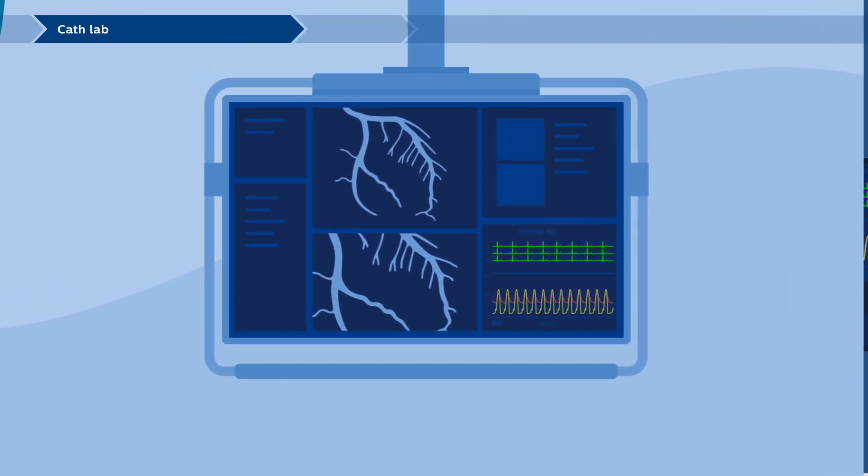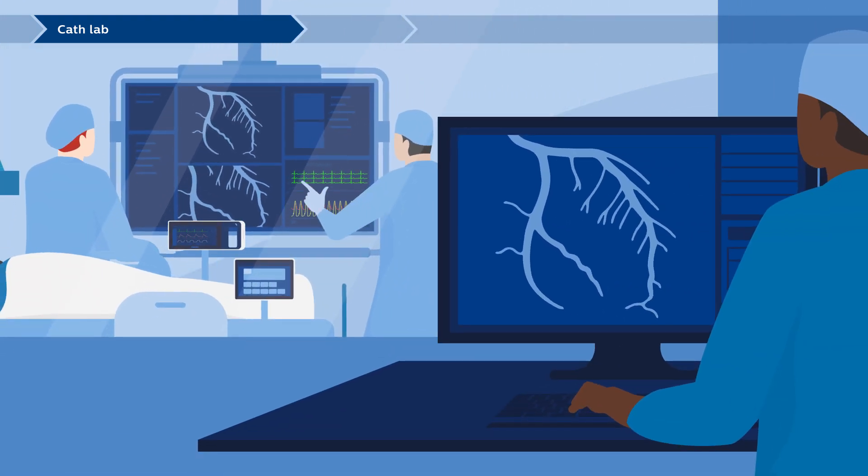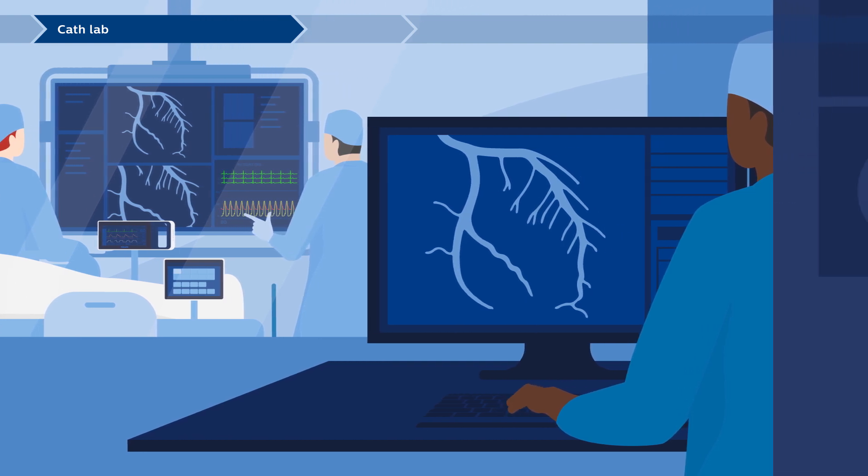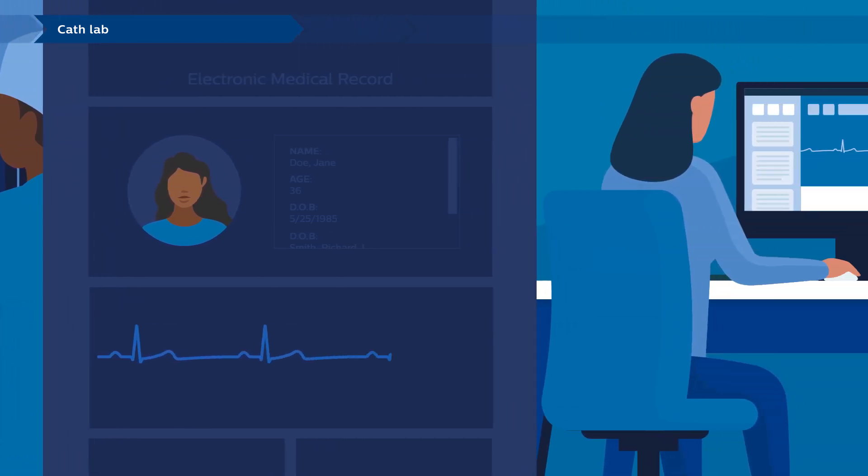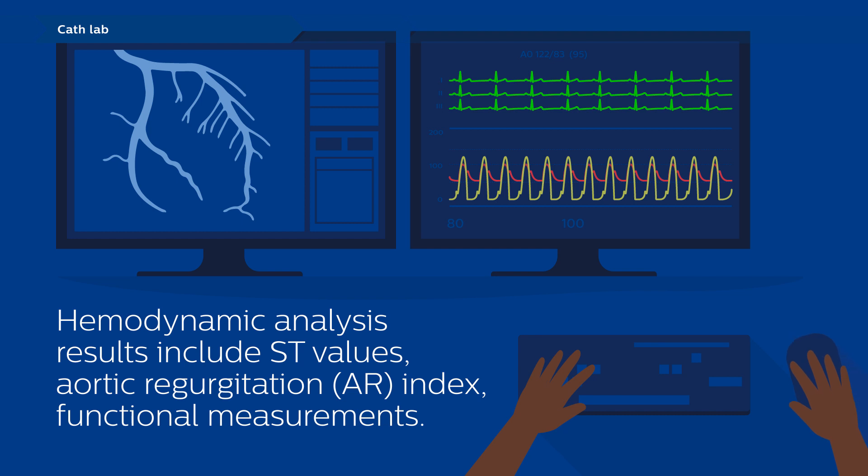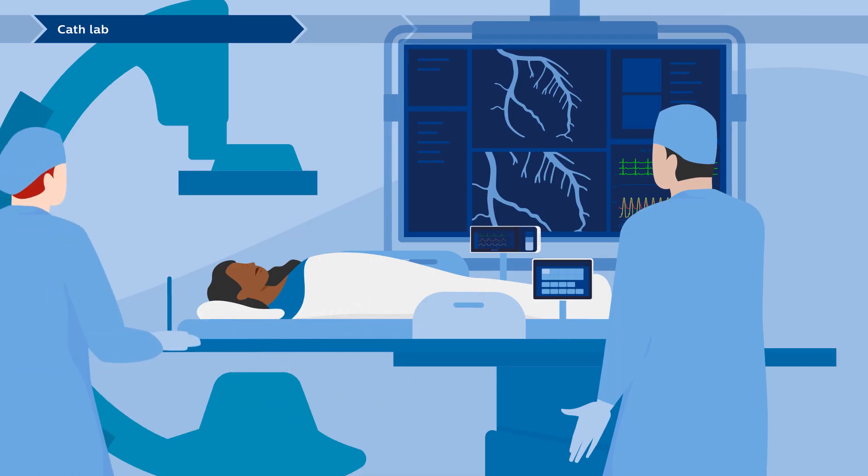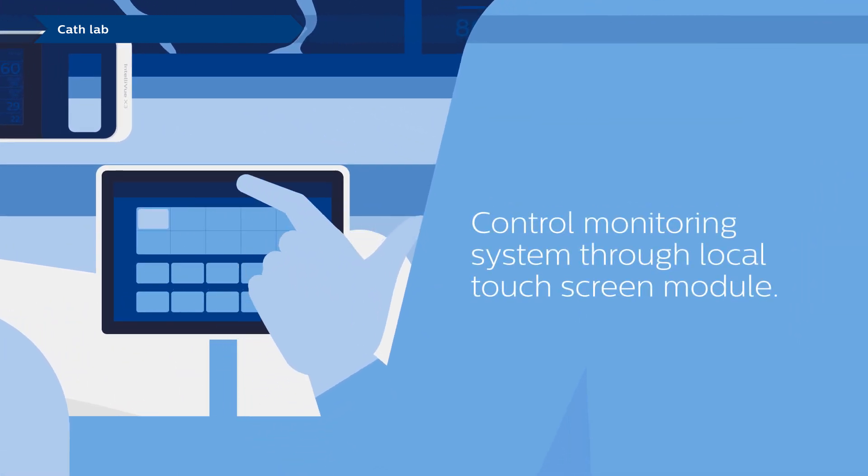Throughout the procedure, cath lab staff can monitor the patient's hemodynamic status. Data is displayed in the control room and on large displays in the exam room. Meanwhile, the hemo system sends high-integrity patient data to the cardiology information system and then to the EMR. Control room staff can perform hemodynamic analysis and display results in the exam room. In the exam room, the monitoring system can be controlled via a local touchscreen controller on the table.